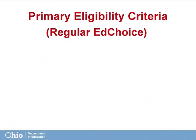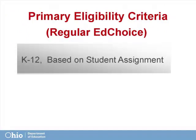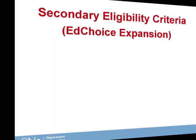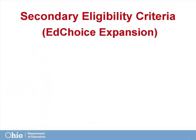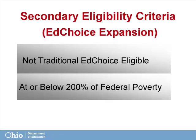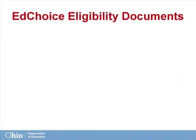To summarize, there are two separate EdChoice eligibility criteria: the traditional or regular EdChoice criteria based on student attendance or assignment to underperforming school buildings, and the EdChoice Expansion eligibility criteria based on students not being traditional EdChoice eligible and living in families with a household income level of 200% below the Federal Poverty Guideline.